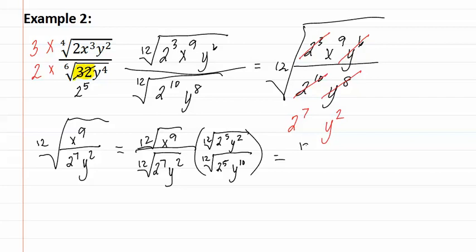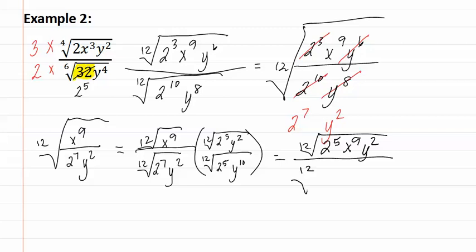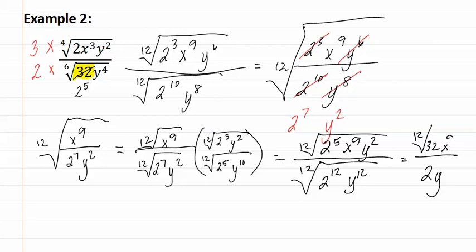This gives us the twelfth root of 2 to the fifth, x to the ninth, y to the second, all over the twelfth root of 2 to the twelfth, y to the twelfth. This means the denominator simplifies to 2y, and the numerator is the twelfth root of 2 to the fifth (thirty-two), x to the ninth, y to the second. This is our final answer.